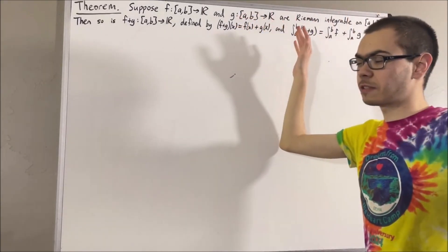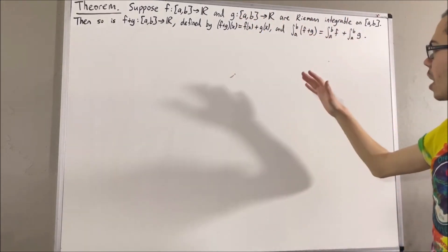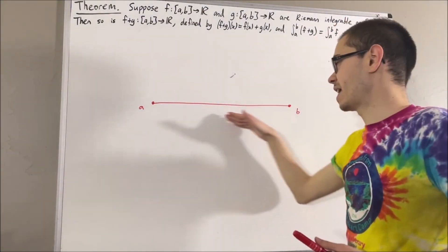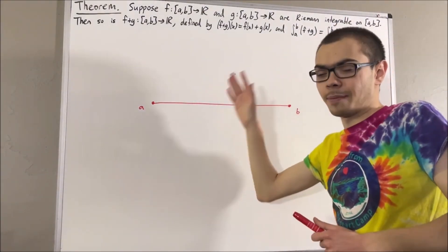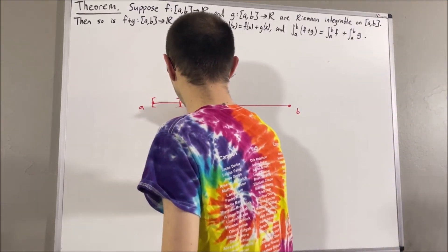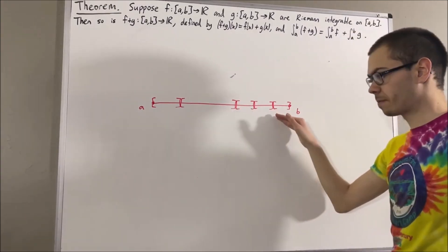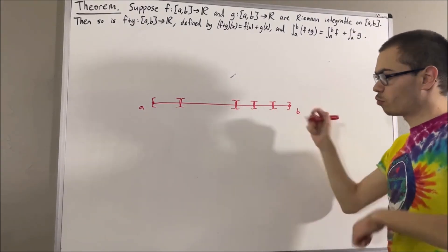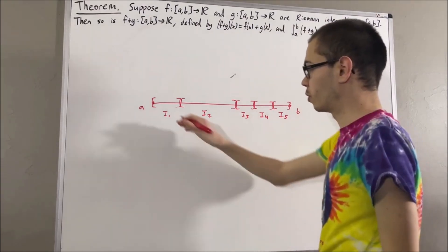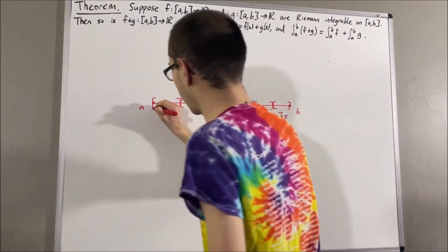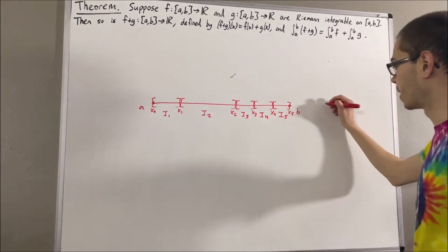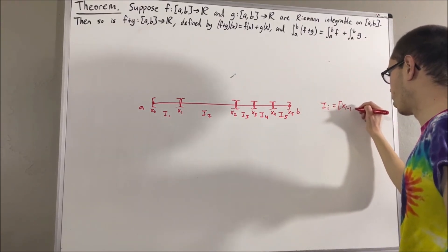Before we get into proving this theorem, let's remind ourselves of some things. A partition of [a, b] is a collection of non-overlapping closed intervals whose union is [a, b]. For example, we might label these intervals i1, i2, and so on, and label the endpoints x0, x1, x2, and so on. In general, each sub-interval i_i is given by [x_{i-1}, x_i].